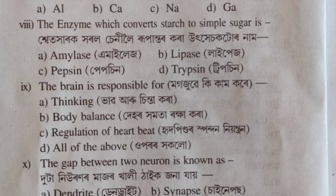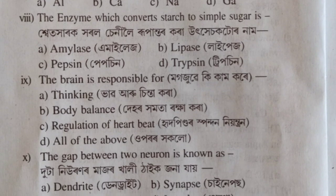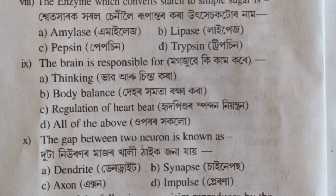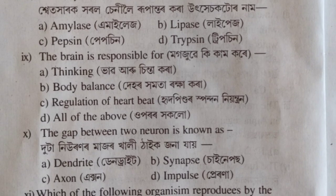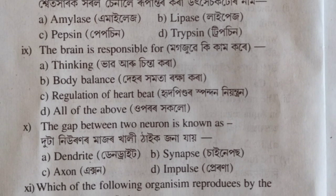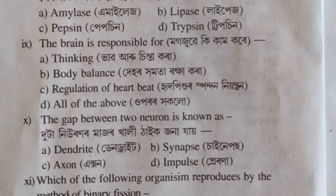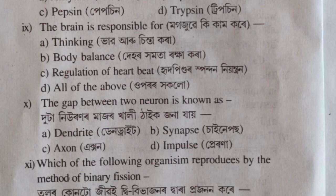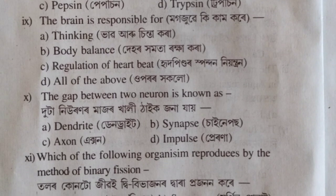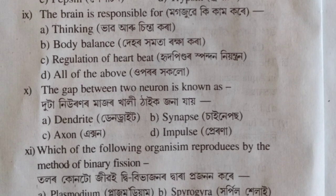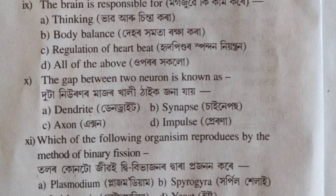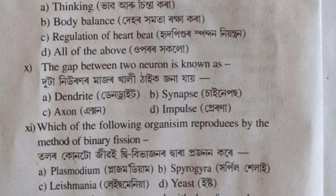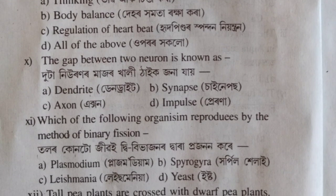The brain is responsible for body balance and regulation of the heartbeat. The gap between two neurons — the correct option is B, and the answer involves the synaptic gap. The correct answer is option C.